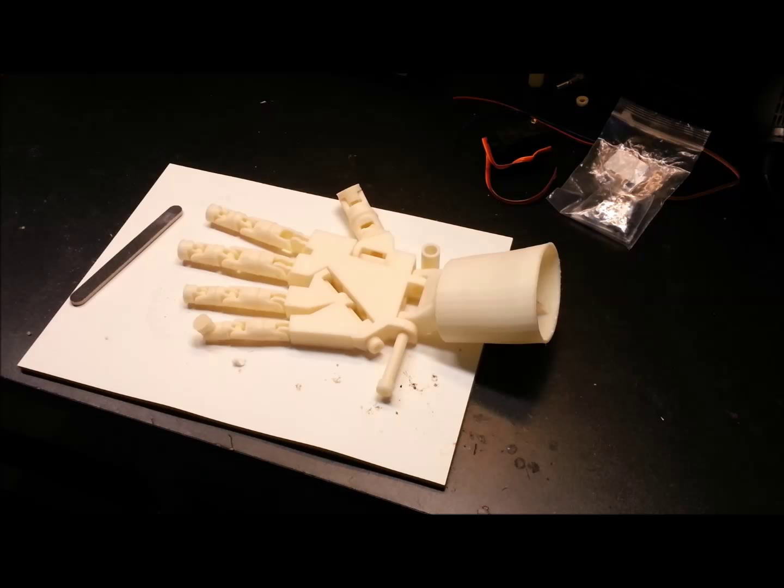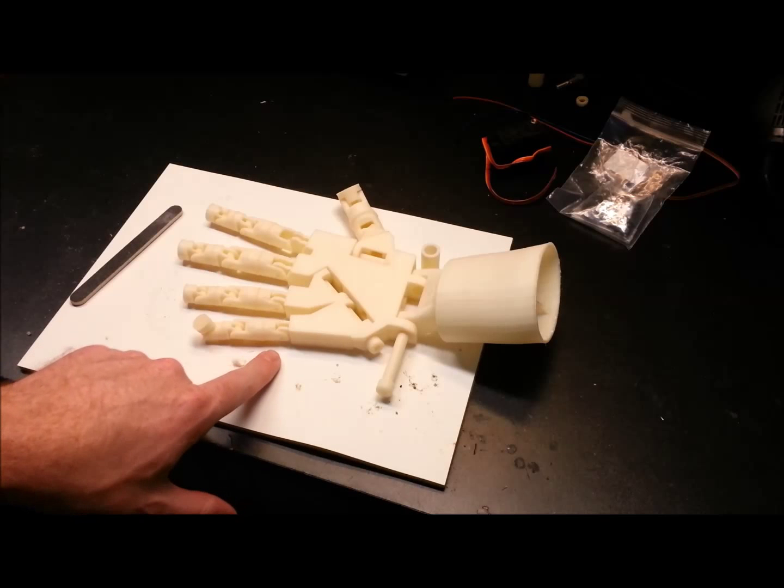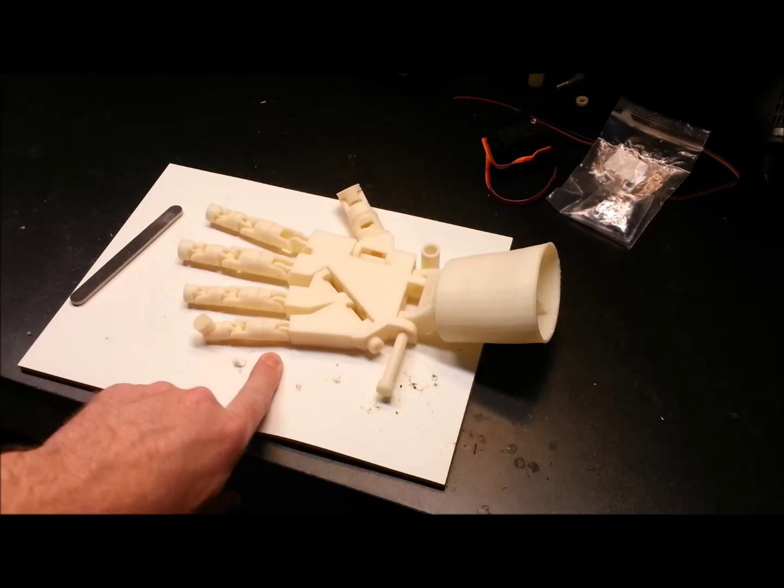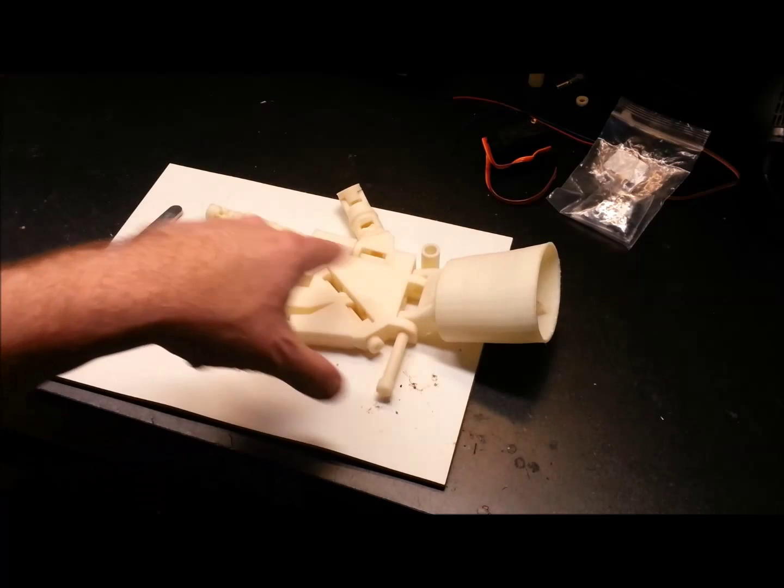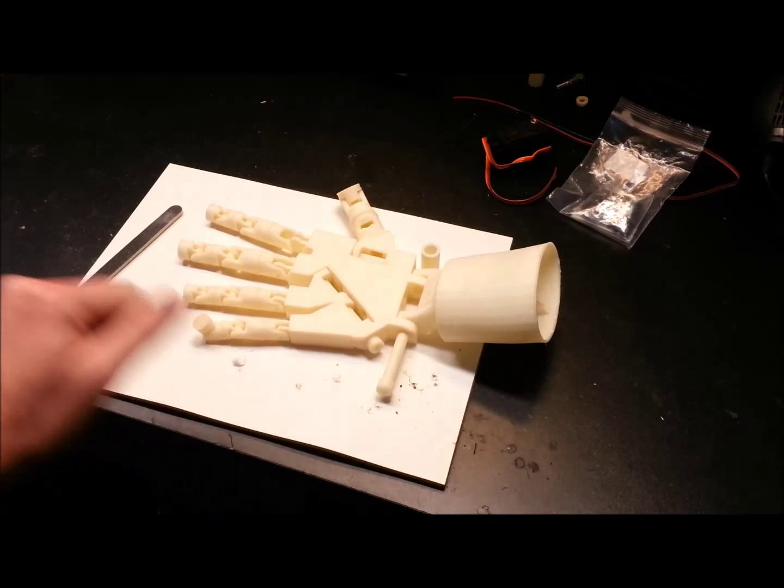But that's about it. We'll see hopefully part 3. I'll get some pivot points in, and I have a roll of braided spectra fishing line ordered to operate each of the fingers. And then we can put the arm together and hook up some servos. Thanks for watching.